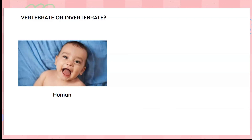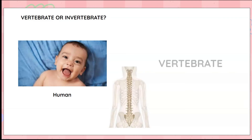Look at the human there. What do you think about us? We are not animals, but we do belong to either vertebrates or invertebrates. What do you think? Do we have a backbone or not? Are we vertebrates or invertebrates? We do have a backbone from our neck to our hip, so we are also vertebrates. Hope you all enjoyed the game today — bye bye!